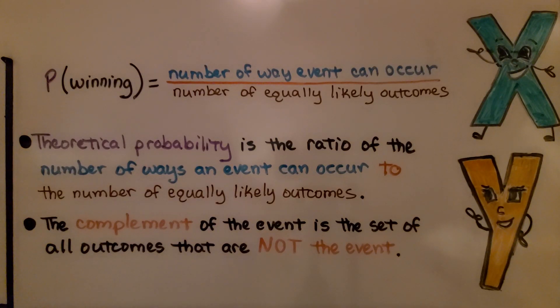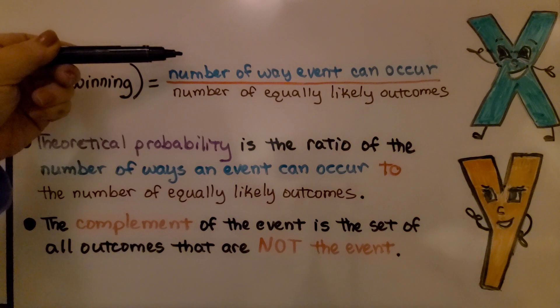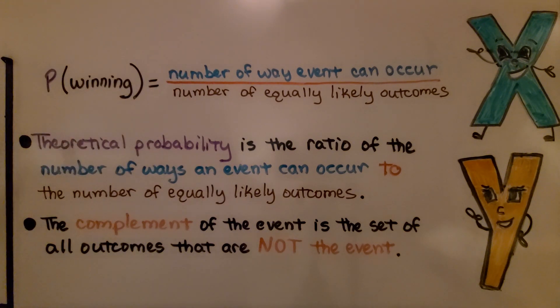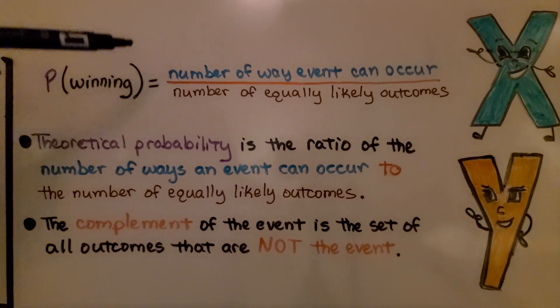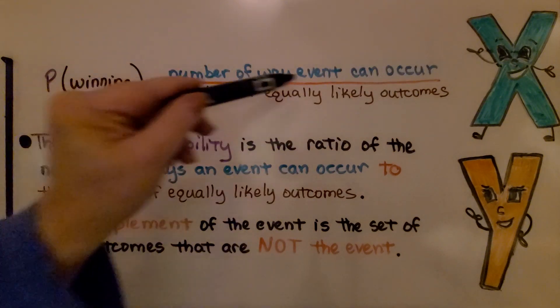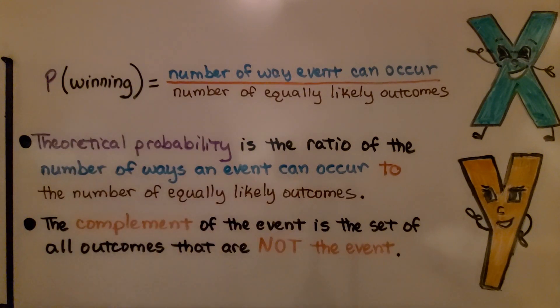So, one more time, this P(winning) equals the number of ways the event can occur over the number of equally likely outcomes. Theoretical probability, it's the ratio of the number of ways an event can occur to, so we can look at this fraction bar, this bar as splitting the ratio as the word 'to', the number of equally likely outcomes.